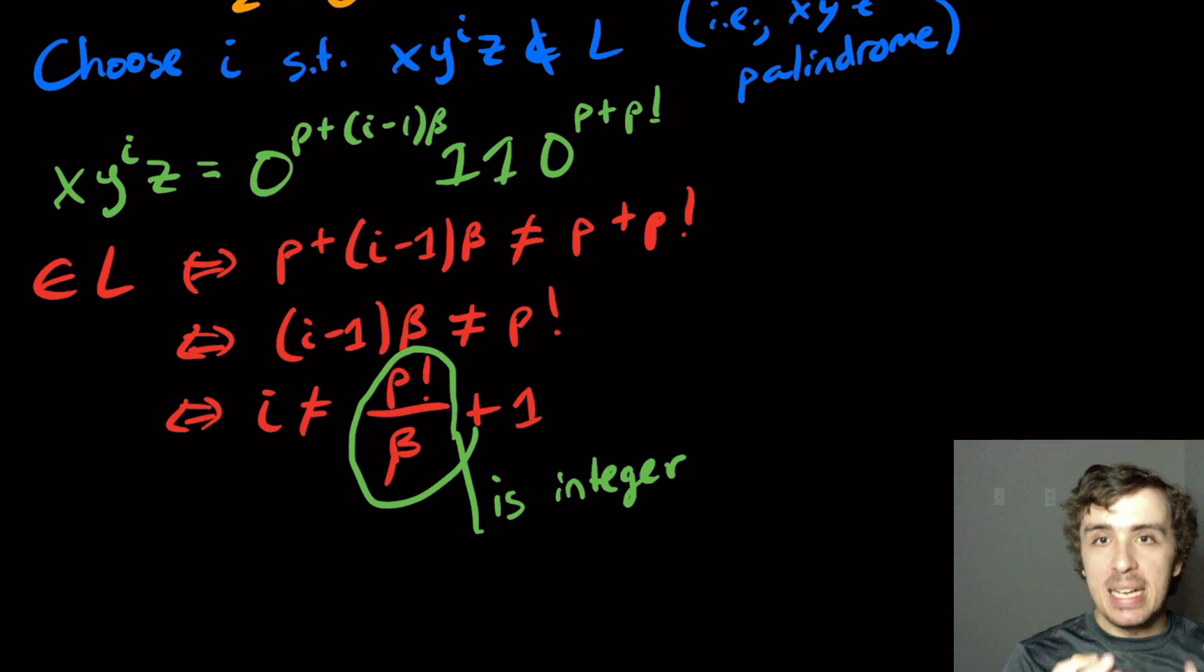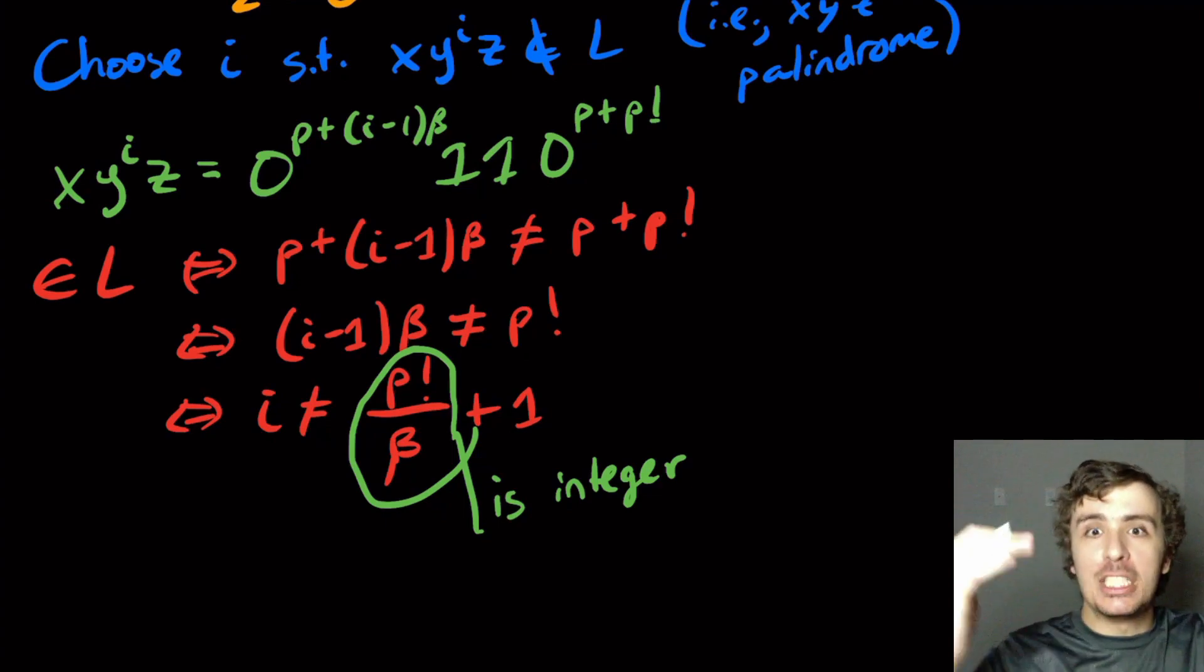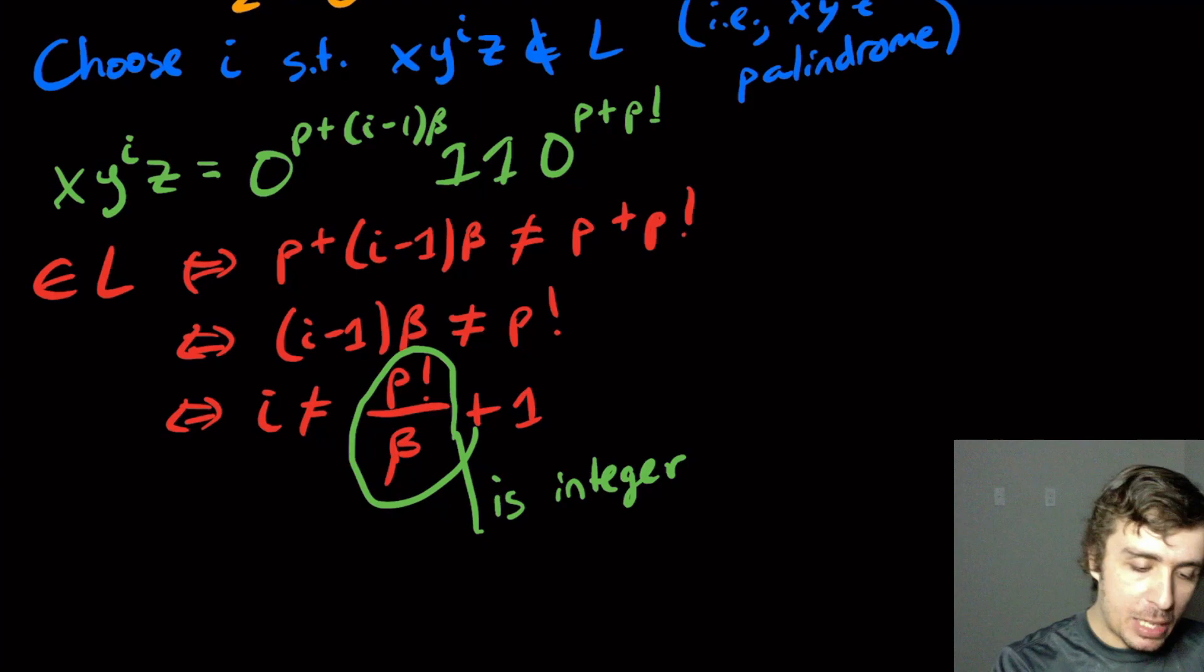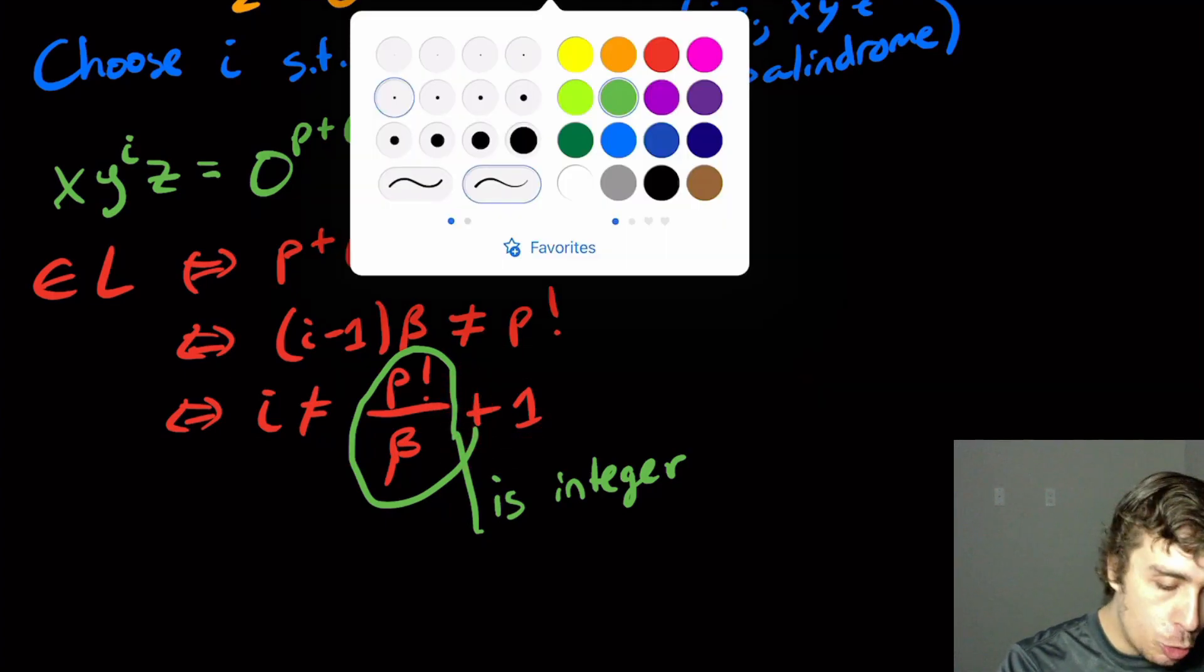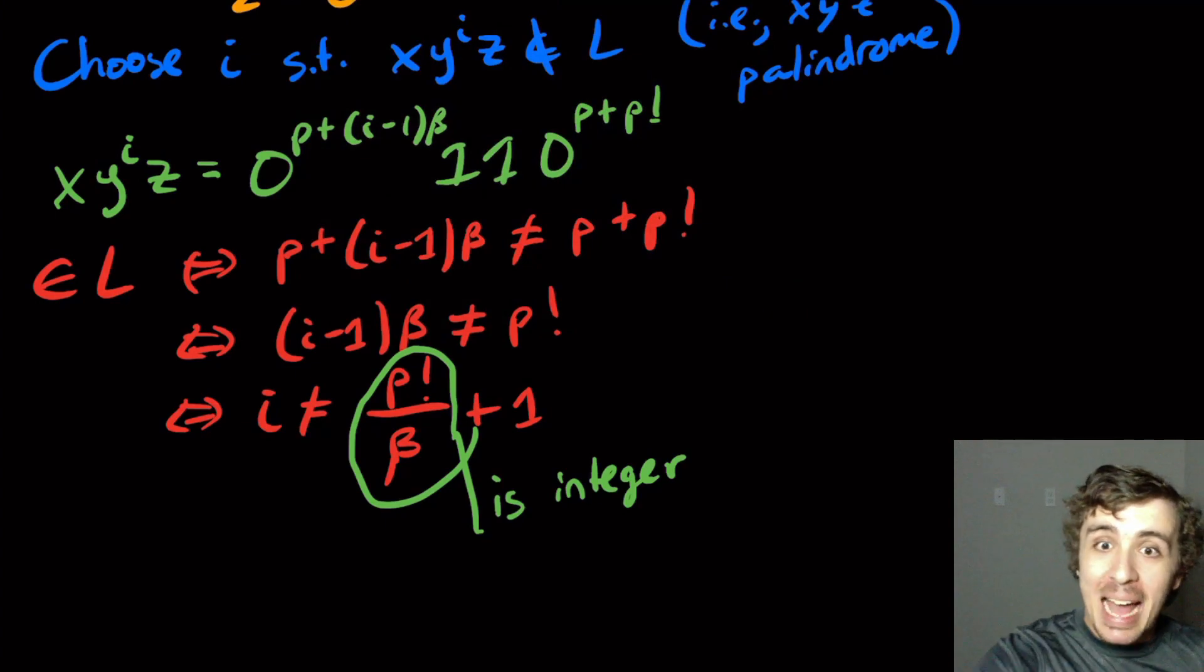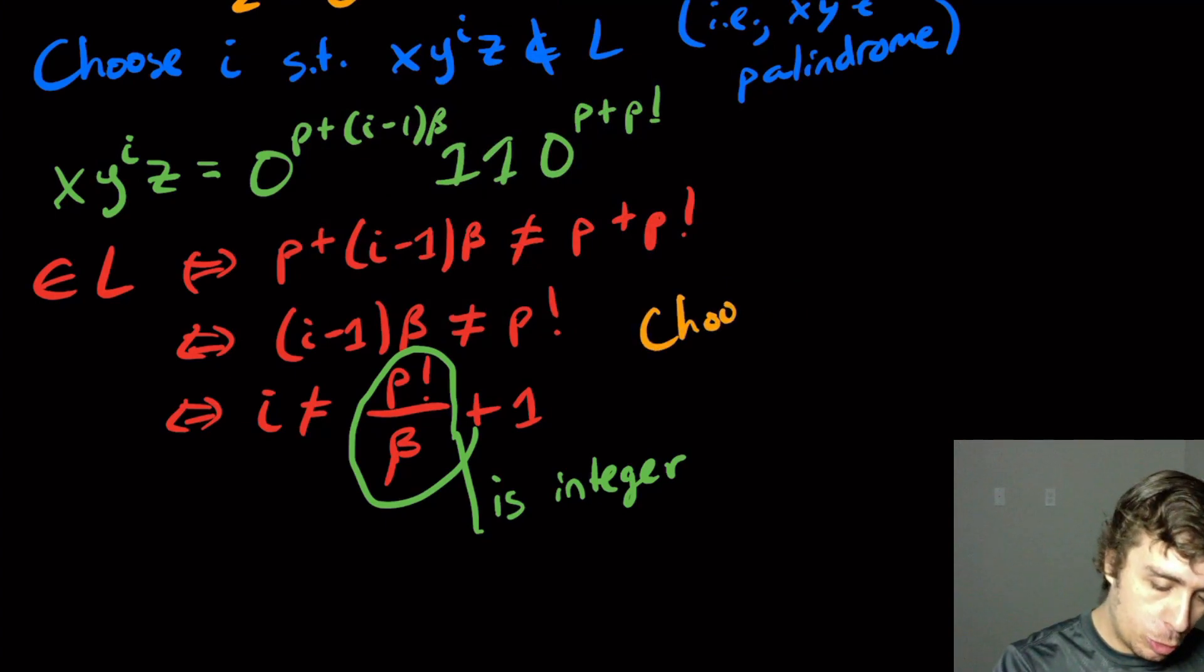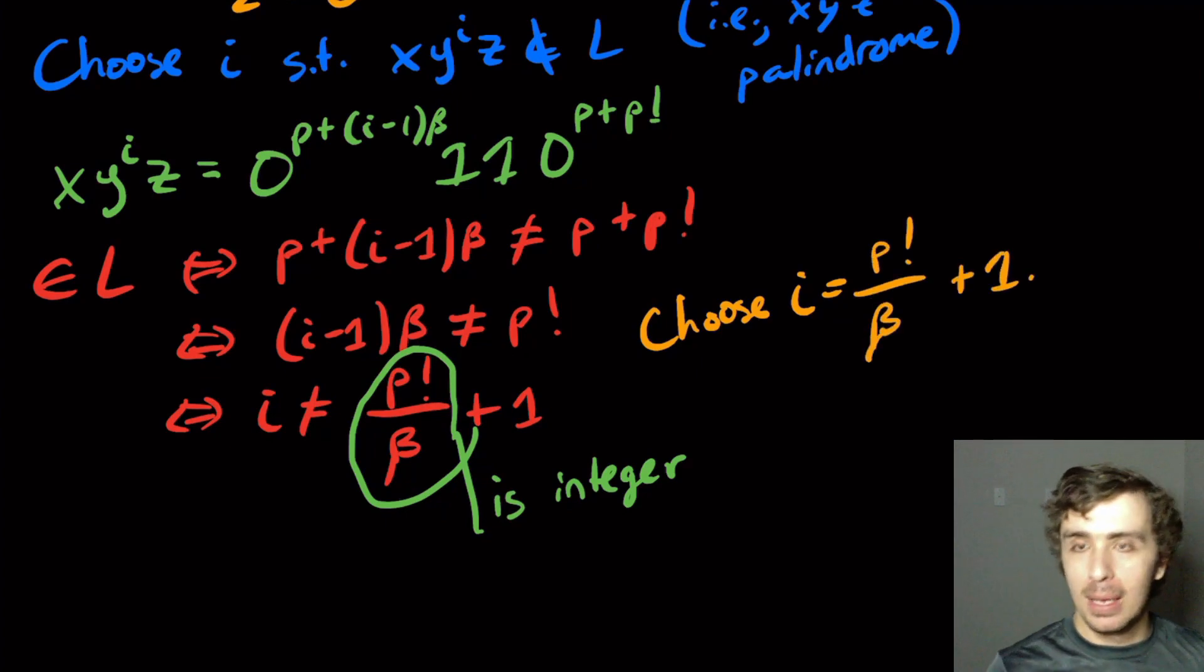And it's important to note that this quantity right here is an integer. And why is it an integer? Because beta is between 1 and P. So beta divides P factorial no matter what it is because it's between 1 and P. And plus 1 obviously doesn't change whether it's an integer. So let's choose I equal to be that number. So let's choose I equal to P factorial over beta plus 1.